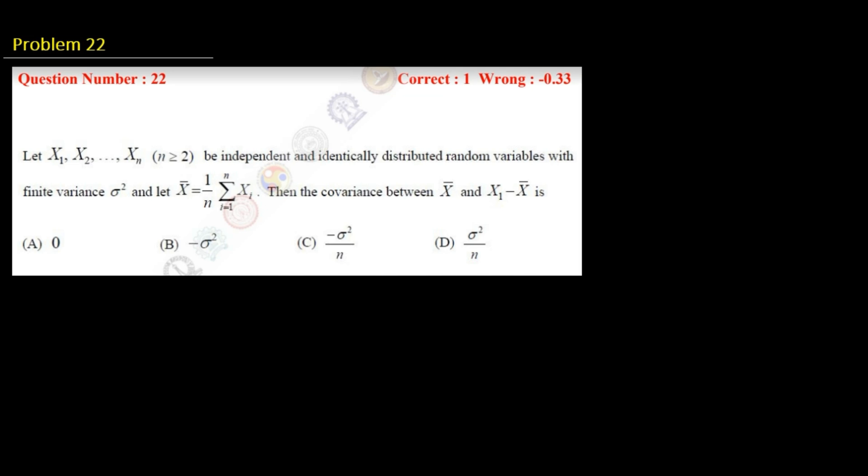So this is question number 22 where you are having some independent random variables and variance and sample mean are given, and you are asked to determine what is the covariance of x bar and x1 minus x bar.